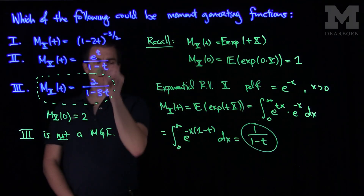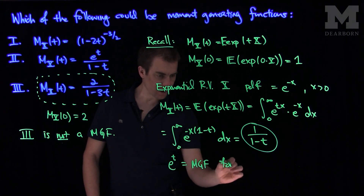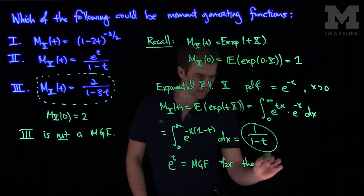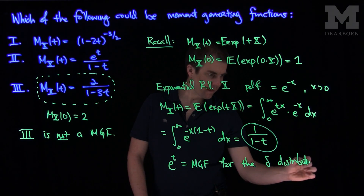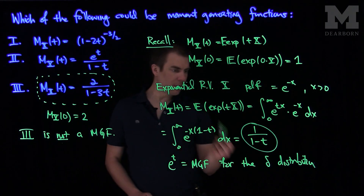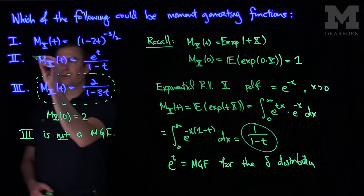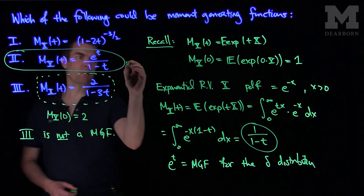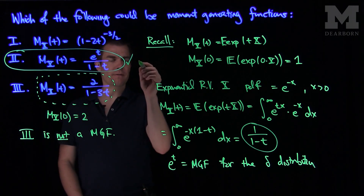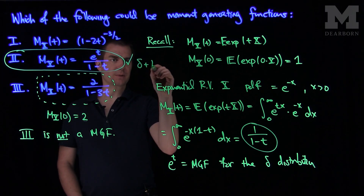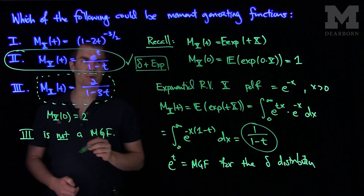And e^t is the MGF for the delta distribution. So if we have the sum of a delta distribution and an exponential random variable, their product e^t / (1 − t) will be the moment generating function. So function 2 is indeed a valid moment generating function — it's the product of two MGFs corresponding to a delta distribution plus an independent exponential distribution.